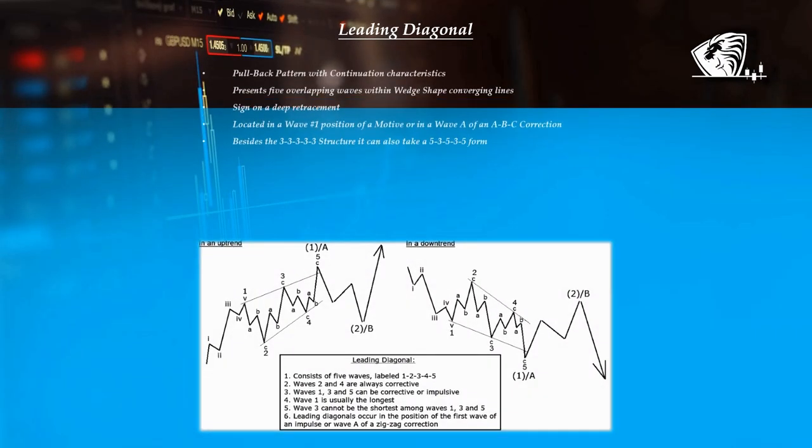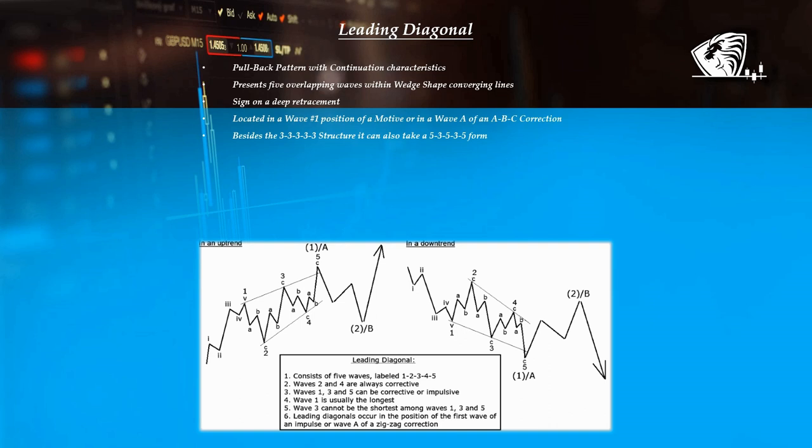The leading diagonal is also a pullback pattern with continuation characteristics, which present five overlapping and contracting impulses within a wedge shape converging lines. A leading diagonal is usually a sign of a deep retracement, and it can be found in a wave 1 position, or in a wave A within an ABC correction. Unlike the ending diagonal, besides the 3-3-3-3-3 structure, it can also take a 5-3-5-3-5 form, in which only wave 2 and 4 subdivide as zigzags ABC.